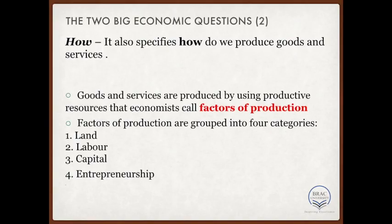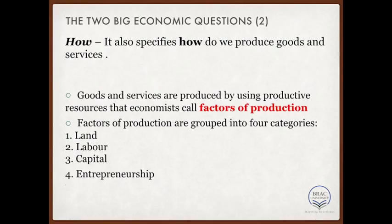Next is how we produce goods and services. We use the factors of production to produce almost any good and service you can think of. This is an important term — factors of production, in short, FOP. You should keep this in your head as you will be seeing this word repeated constantly throughout this course. The factors of production are made of land, labor, capital, and entrepreneurship.